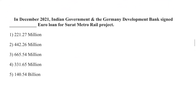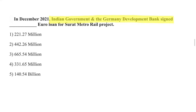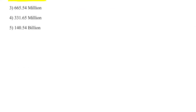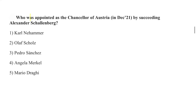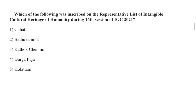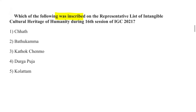In December, the Indian government and the German Development Bank signed a loan of 442.26 million euros for the Surat Metro Rail Project. Karl Nehammer was appointed as the Chancellor of Austria, succeeding Alexander Schallenberg.